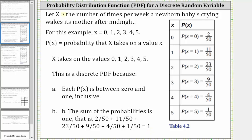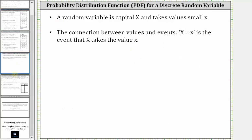I do want to mention a couple things about capital X, the random variable, and little x. The random variable is capital X and takes on the values small x. So the connection between the values and the events is that capital X equals small x is the event that capital X takes the value of small x.